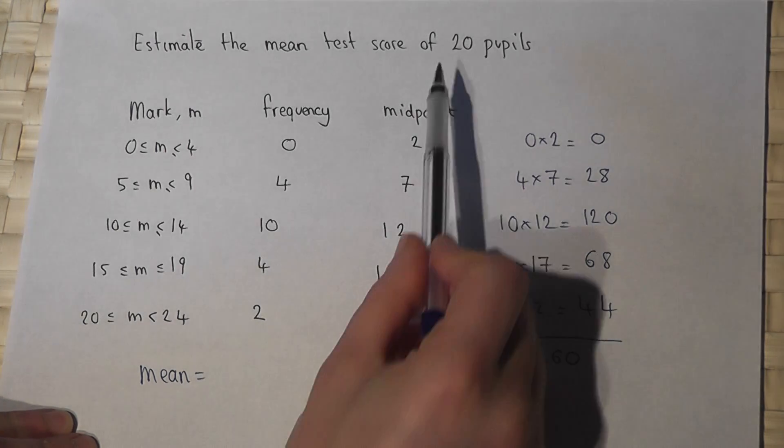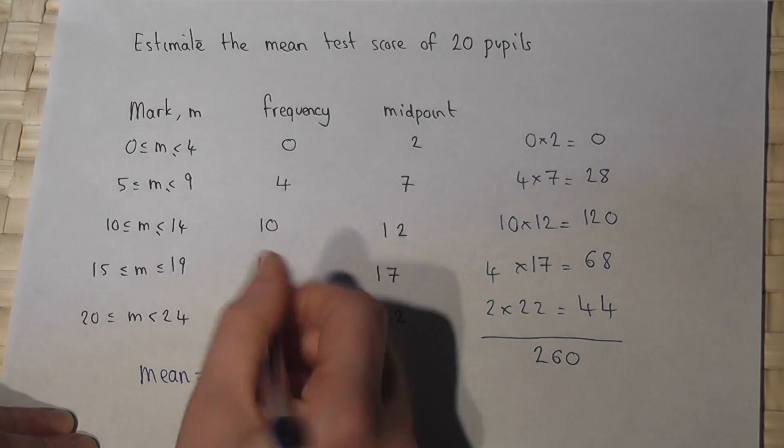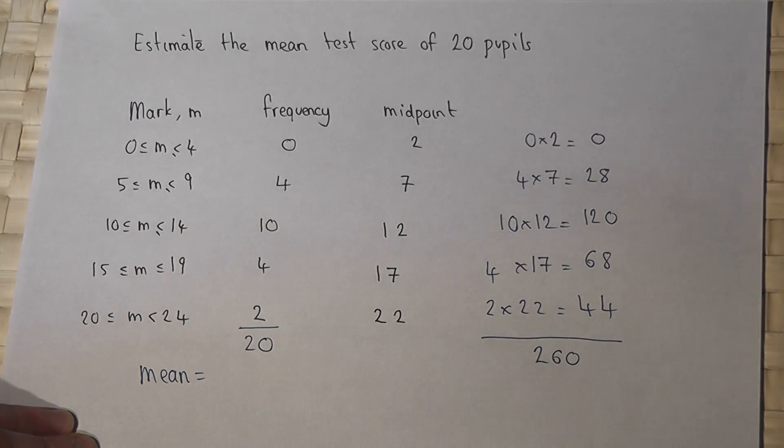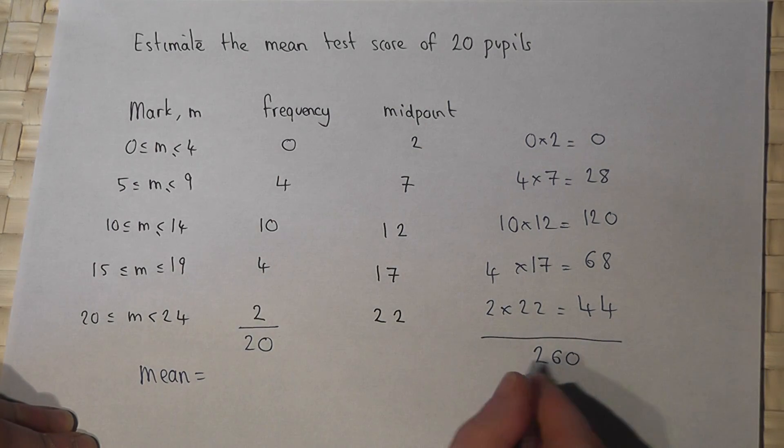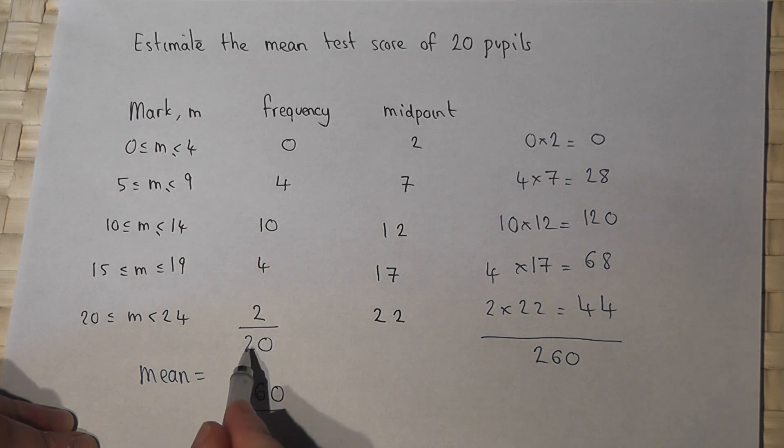However, there were twenty people. We can verify that four plus ten plus four plus two is twenty. So to find the mean, or at least an estimate for the mean, I do the total of all the scores divided by the total number of people.